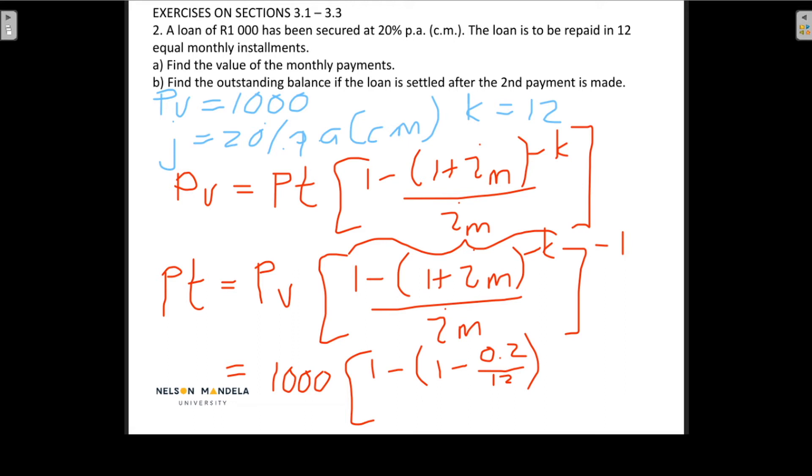The N or K is 12 and all of this to the minus 1. Okay and you can do the calculations for this. When I did the calculations I got that the equal payments are equal to 92 rands and 63 cents.